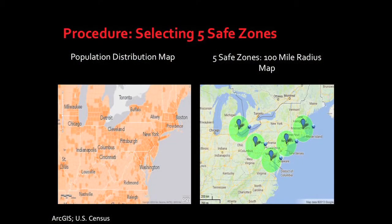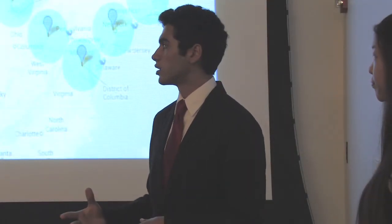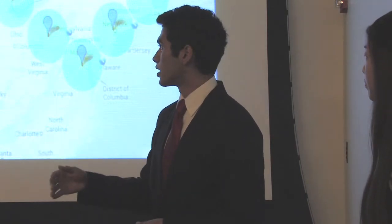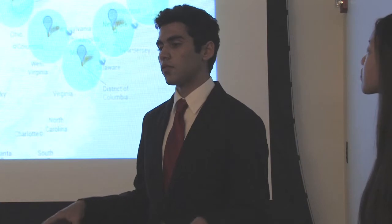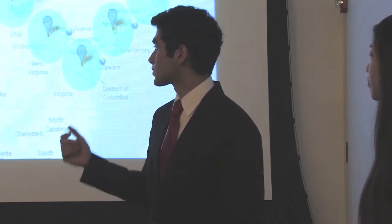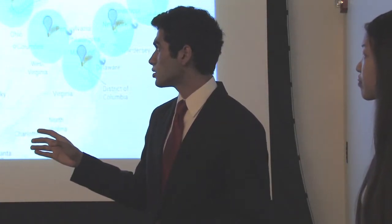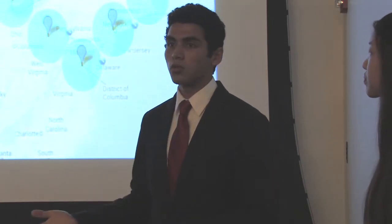In order to find our five safe zones, we started by fulfilling each requirement. Every safe zone had to have an international airport, a major hospital, and a navigable waterway, and it could not be one of the ten most populated cities in America. We eliminated the ten most populated, then took a list of all cities in the U.S. with an international airport, leaving us with 52 cities. We ensured each remaining city was located near a navigable waterway, narrowing it further, and then ensured each had a major hospital. All in all, we were left with 15 cities.